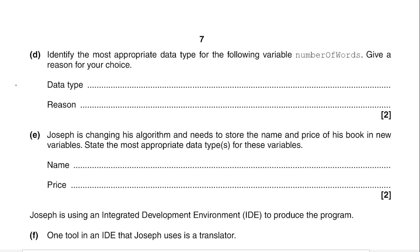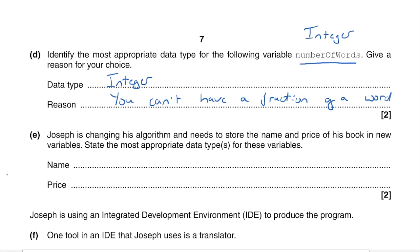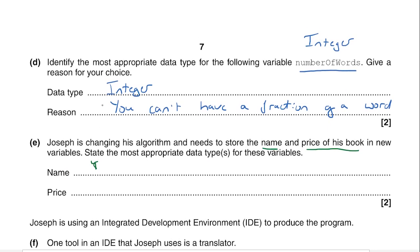Part D asks for the most appropriate data type for the number of words variable, with a reason. The number of words is a number, so it's either a float or an integer. Since you can't have half a word, it's going to be an integer — a whole number. A float would be a decimal, and you can't have 0.5 of a word. Part E asks for data types for two new variables without requiring a reason: the name of the book is a string, and the price of the book is a float or real — sometimes called double depending on the language. That gets you your two marks.